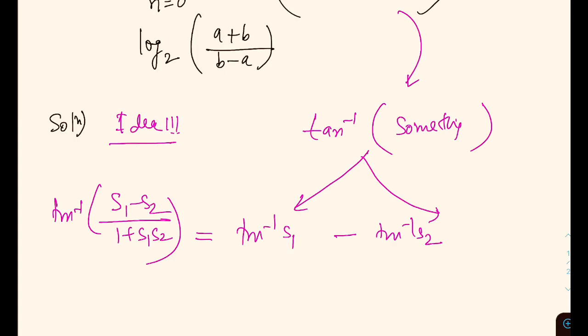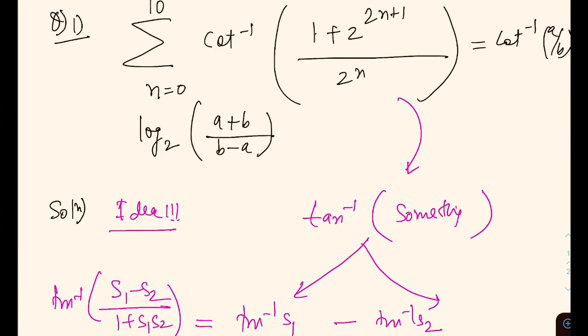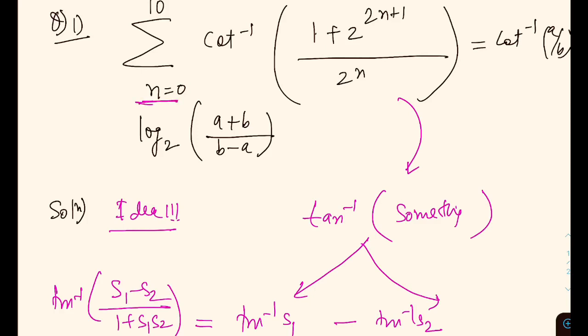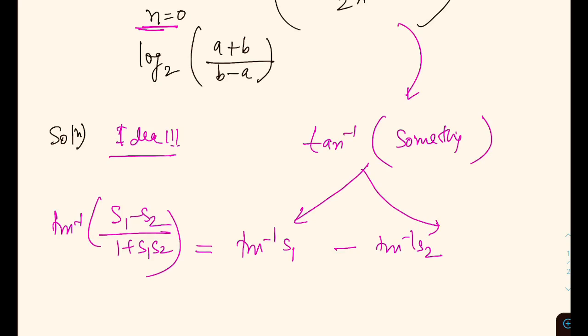And tan inverse has a very special structure. We know that tan inverse A minus tan inverse B is going to be tan inverse (A minus B) by (1 plus AB). We can write it with these natural numbers since N is running from 0 to 10, so it is automatically going to take care of those restrictions.